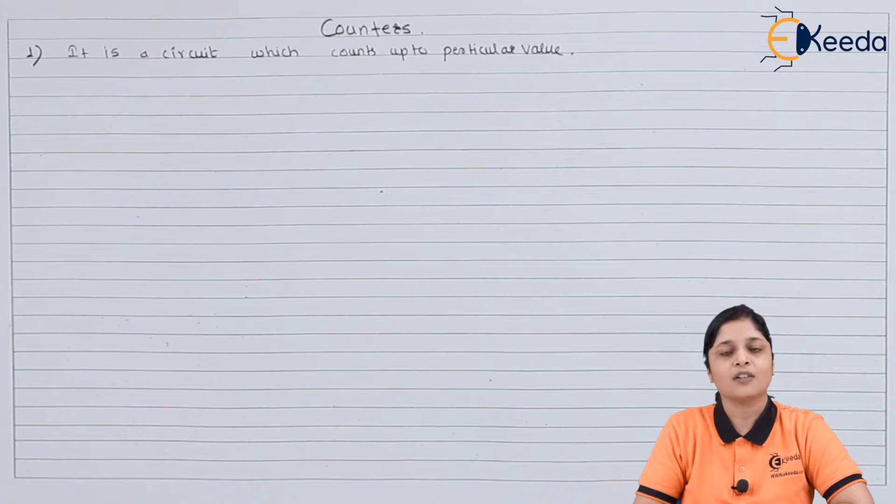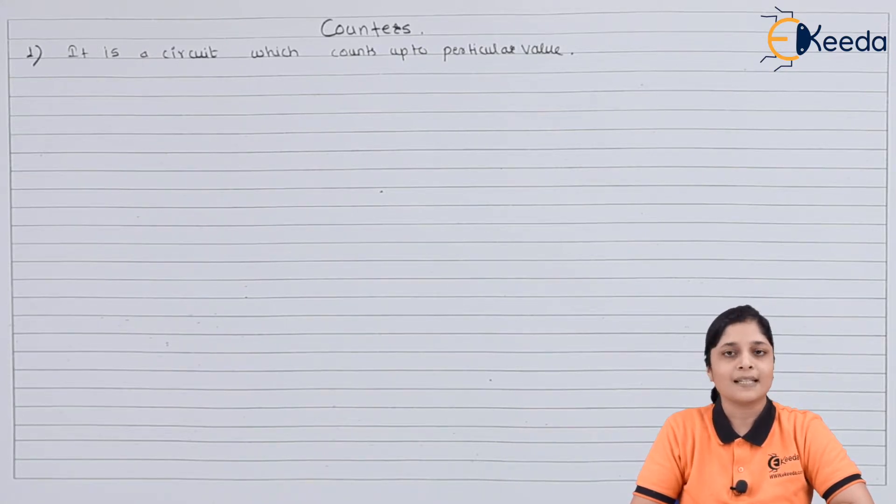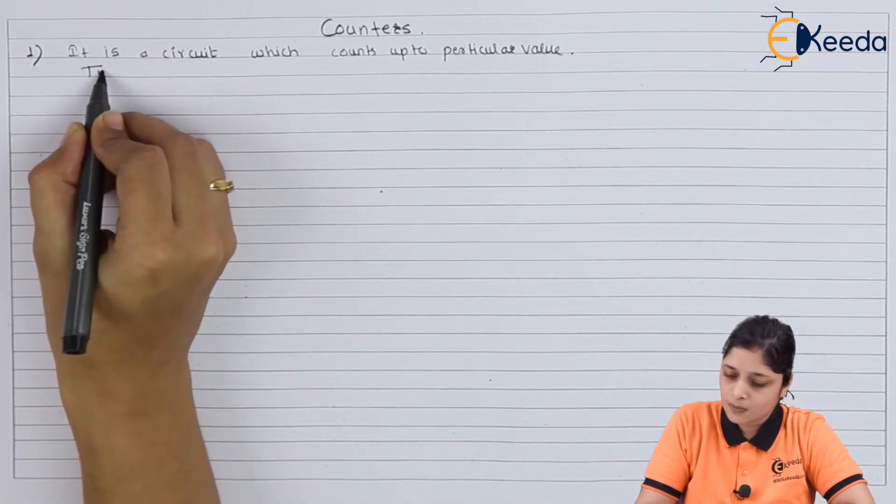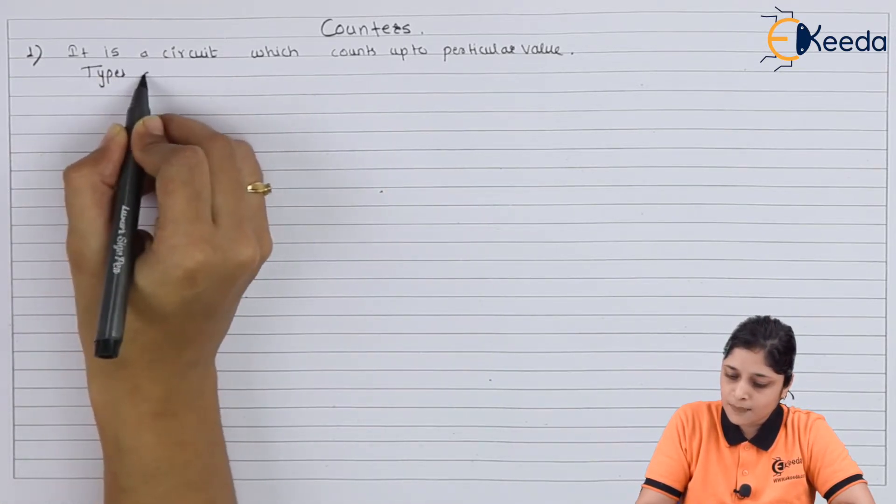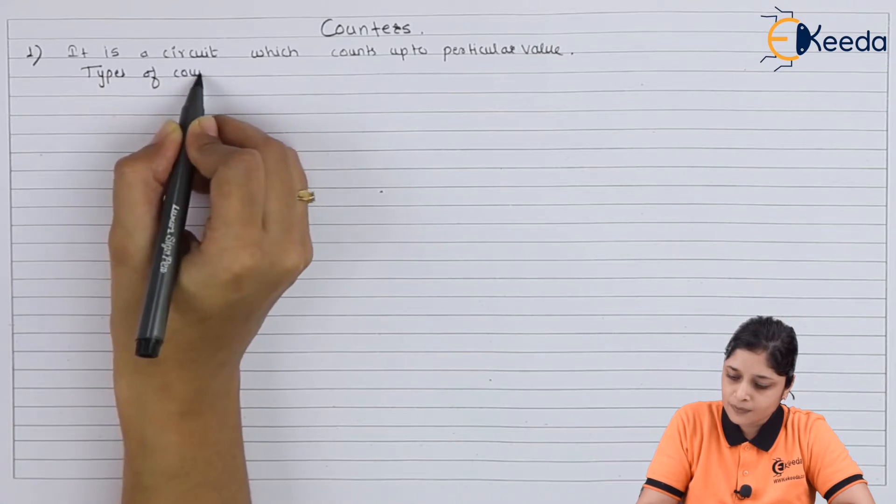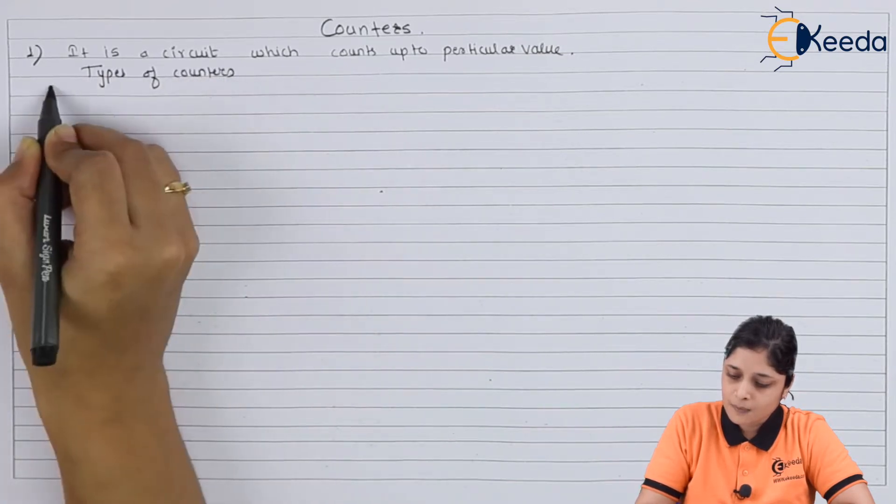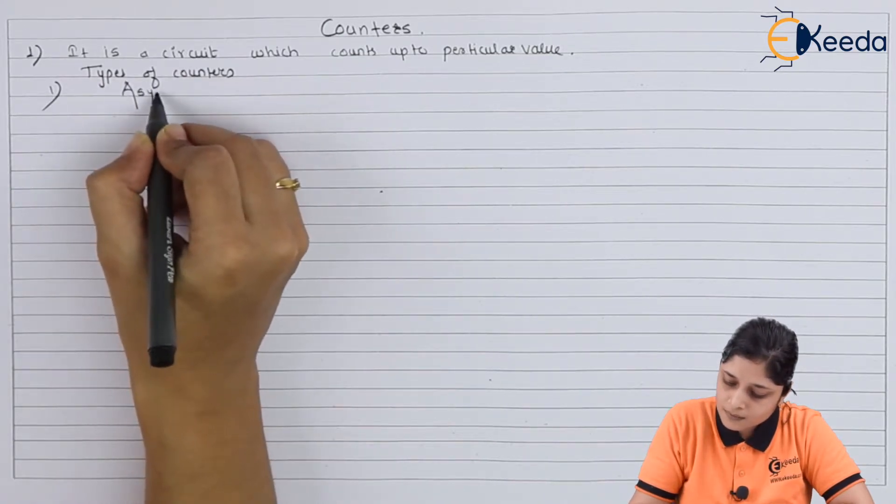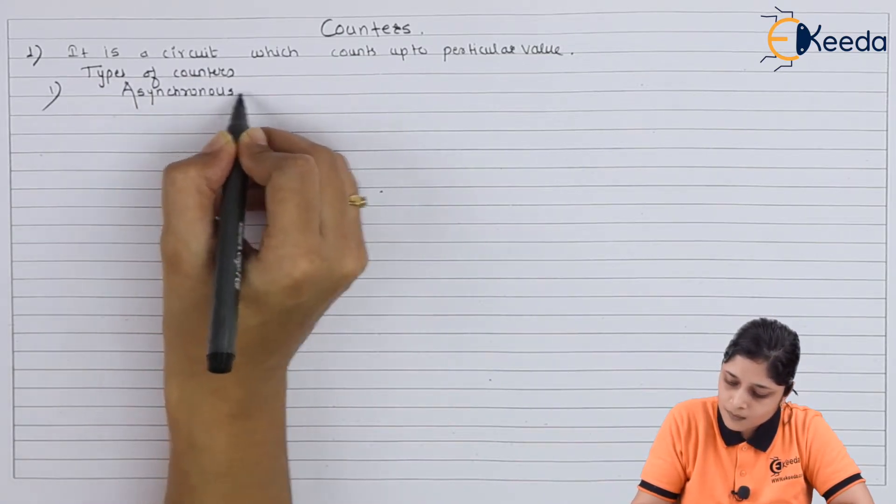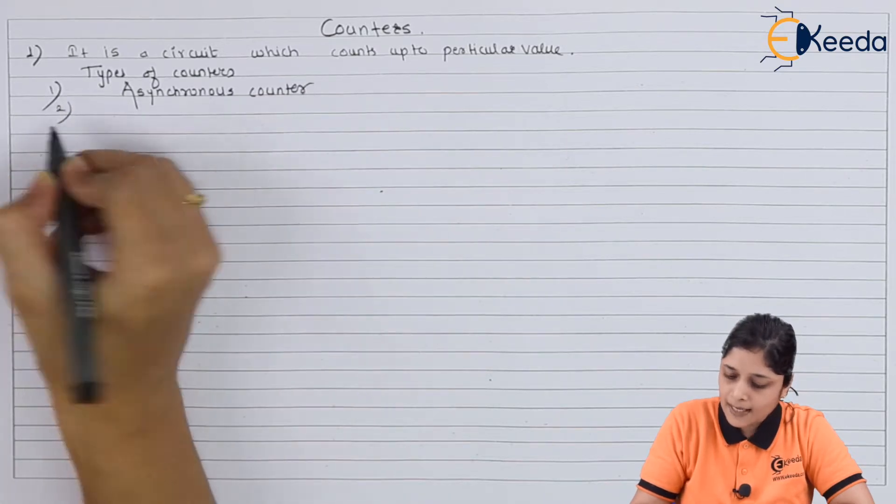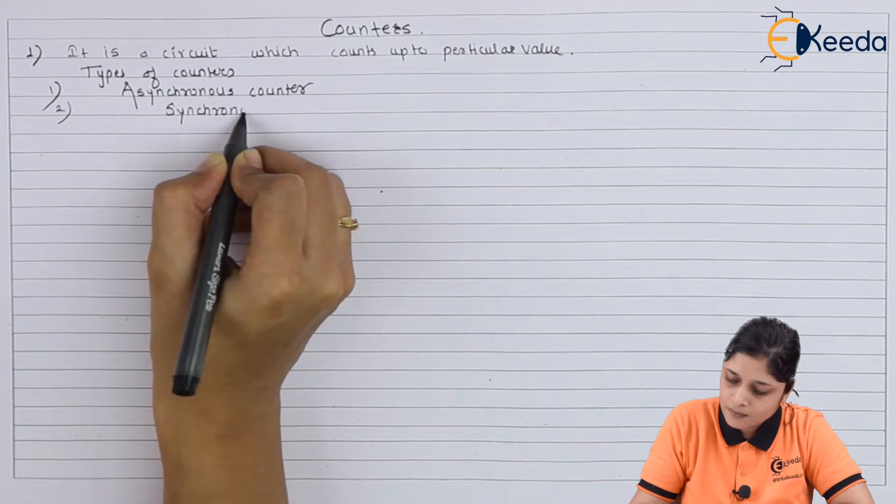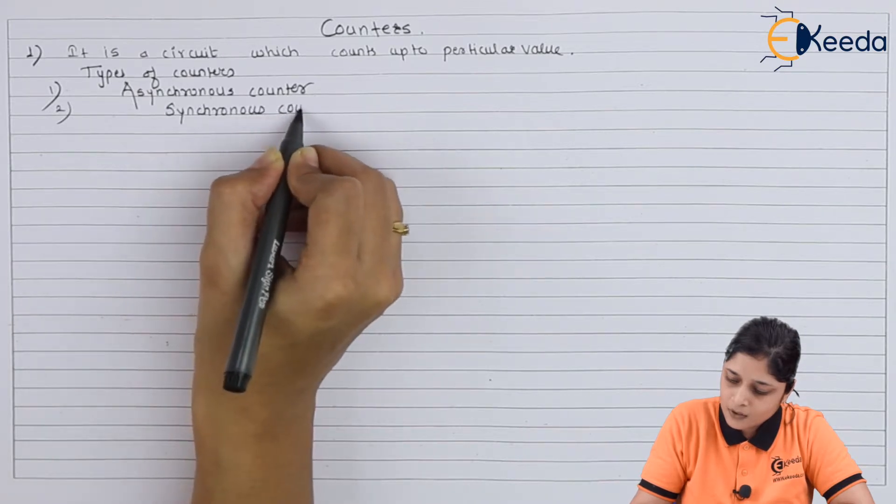Now basically there are two types of counters: asynchronous counters and synchronous counters. First is the asynchronous counter, and second we have the synchronous counter.